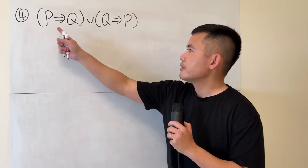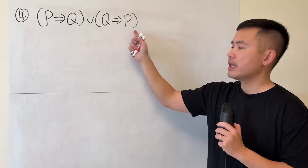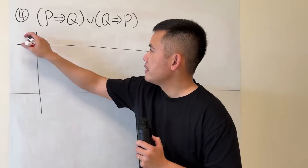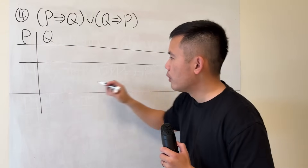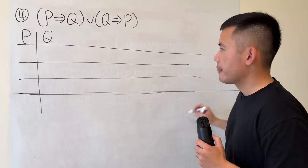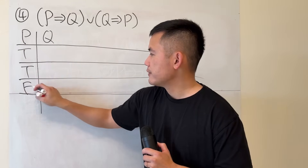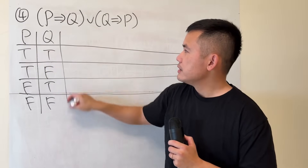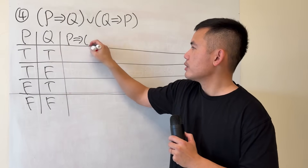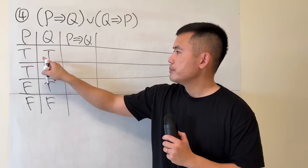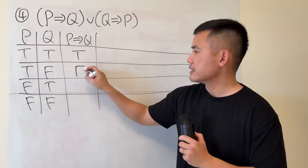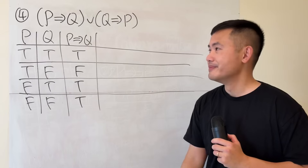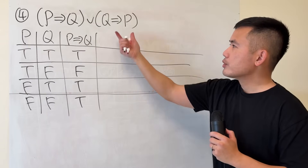Example 4: (p → q) OR (q → p). Let's set up a truth table. We need four rows for p and q: true/true, true/false, false/true, false/false. First, let's work out p → q: true implying true is true, true implying false is false, false implying true is true, false implying false is true.